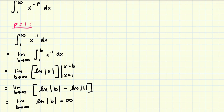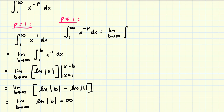Now let's consider the case where p is not equal to one. The reason we break into these two cases is that when we have x to the negative one power, the antiderivative is different than for any other power. For the integral from one to infinity of x to the negative p power, since p is not equal to one, we can use the power rule. This equals the limit as b approaches infinity of the integral from one to b of x to the negative p power dx.